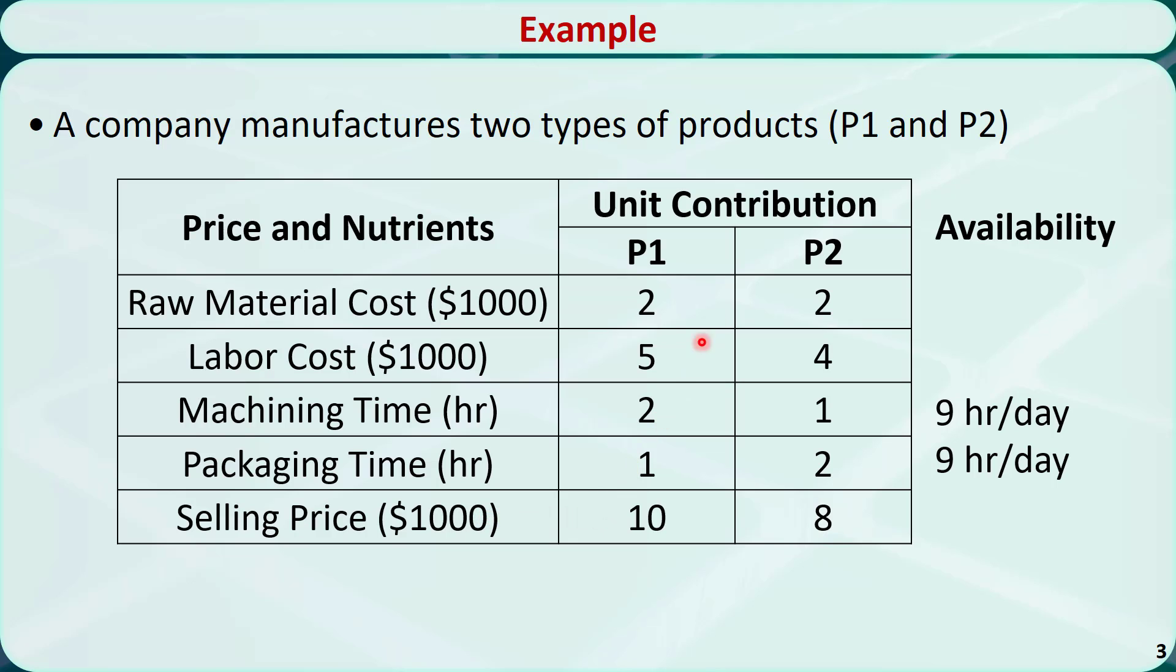For P2, these values are listed in this column accordingly. Each day, the demand for P1 and P2 are unlimited. There are only 9 hours of machining time and 9 hours of packaging time available per day. The company wants to know how many units of P1 and how many units of P2 to make each day to maximize the profit.